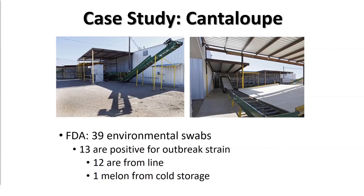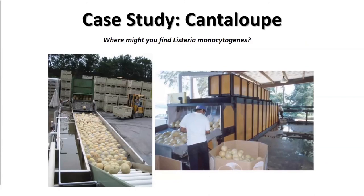We wouldn't expect something this extreme to happen normally, but it is really important to identify those post-harvest areas that might be harborage sites for Listeria monocytogenes. This might include harvest bins, conveyors, and other areas where moisture and debris can build up and create an ideal environment for Listeria monocytogenes to grow and thrive. If you're planning on growing produce and operating a packing shed or small-scale packing house, you definitely want to take this into consideration, as it has caused issues in the past.